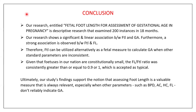Our study concluded that there was a significant linear association between foot length and gestational age. Furthermore, a strong association is observed between foot length and femur length. Therefore, foot length can be used as an alternative fetal parameter to calculate gestational age when other standard parameters are inconsistent. Given that fetuses in our nation are constitutionally small, femur length to foot length ratio greater than or equal to 0.9 or 1 is accepted as typical. Our study findings support the notion that assessing foot length is a valuable measure, especially when other parameters such as BPD, abdominal circumference, head circumference, and femur length don't reliably indicate gestational age.